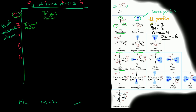Let's do one more example. Let's say we have 2 valence atoms and 2 lone pairs. We look over here and we see that 2 valence atoms and 2 lone pairs — that is tetrahedral.